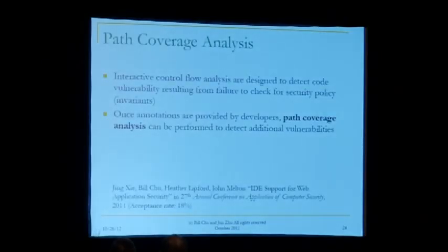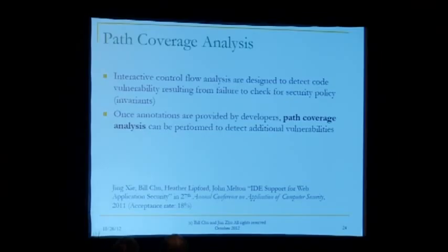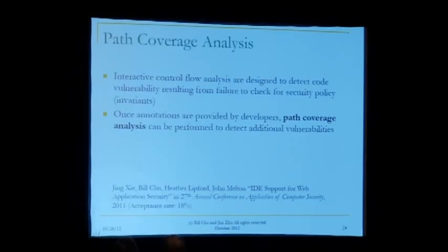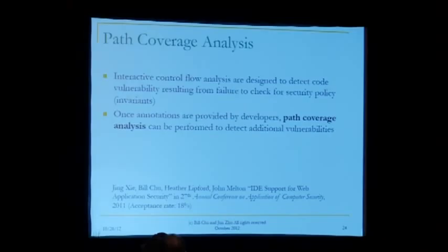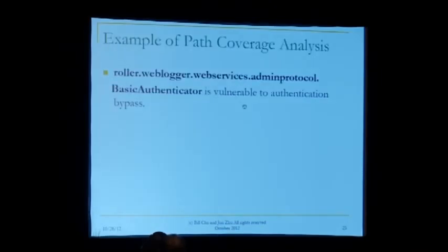I also want to talk about the path coverage algorithm. Once you have the annotations, how do you take advantage of this information and find additional vulnerabilities? This is what we call the path coverage analysis — it looks for invariants. We assume the developers give us those invariants, and then our goal is to look at all possible execution paths to see if all paths are covered by Boolean checks. If not, that signifies some kind of bypass problem. This was reported last year as theory; over this past summer, he actually implemented this algorithm.